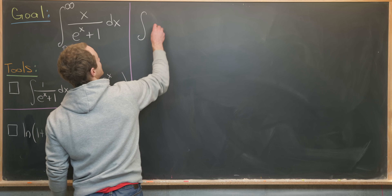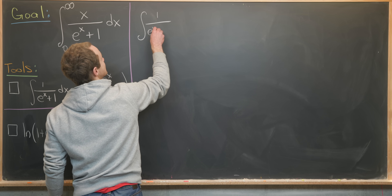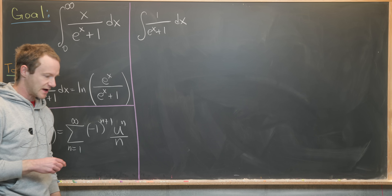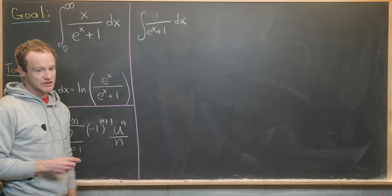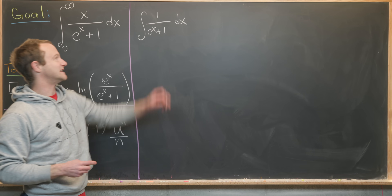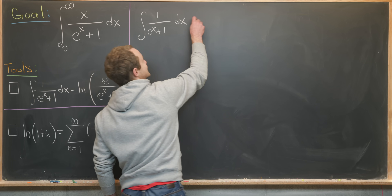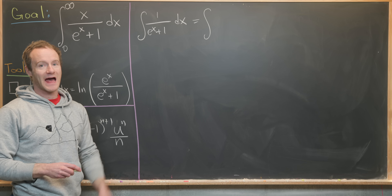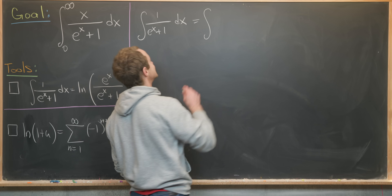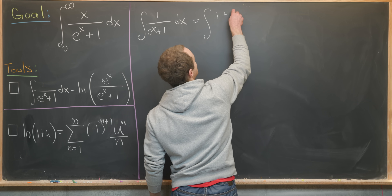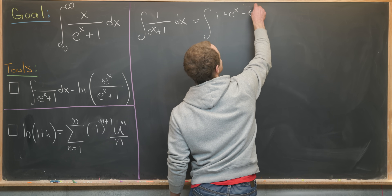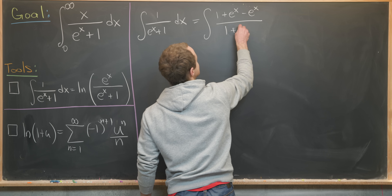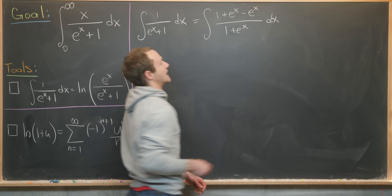We've got the integral of one over e to the x plus one dx. We'll use one of mathematicians' favorite tricks, which is adding zero to the numerator in a careful way. We'll add it as plus e to the x minus e to the x, giving us one plus e to the x minus e to the x, all over one plus e to the x dx.